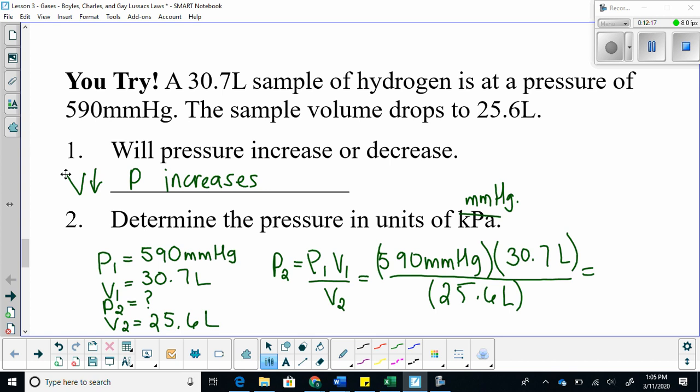Here I have the solution set up. So I have my variables laid out, my formula isolated. Once I plug everything in, I should get an answer of 708 millimeters of mercury. This makes sense. Liters cancels out. My units of interest are millimeters of mercury. And that should be my final answer.